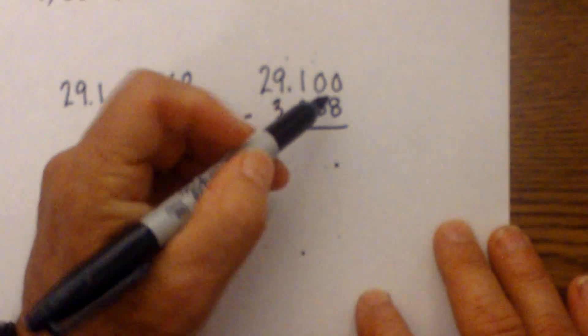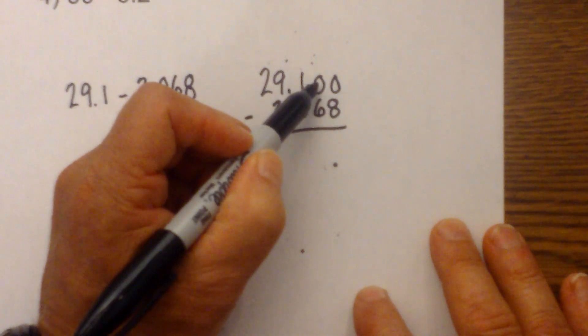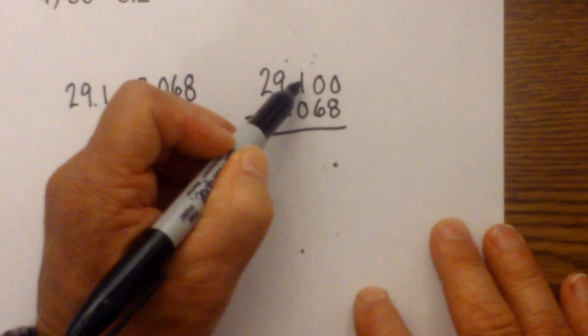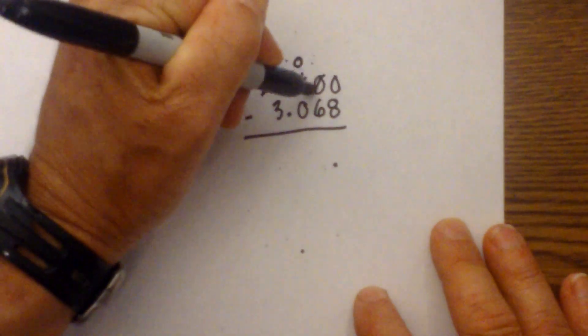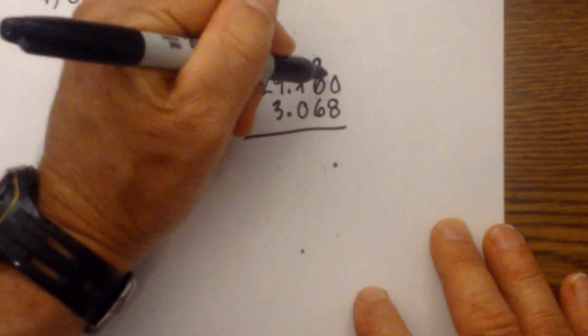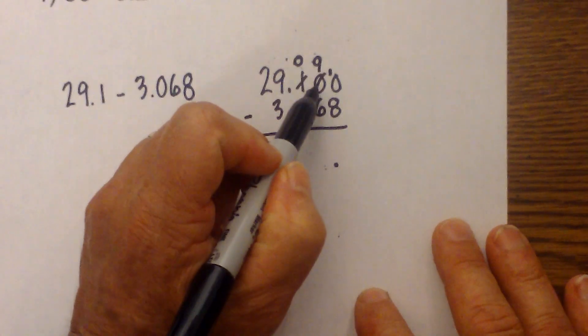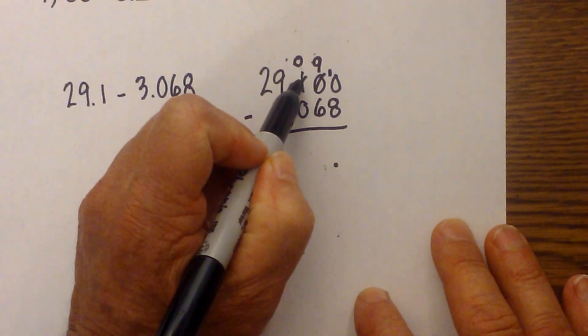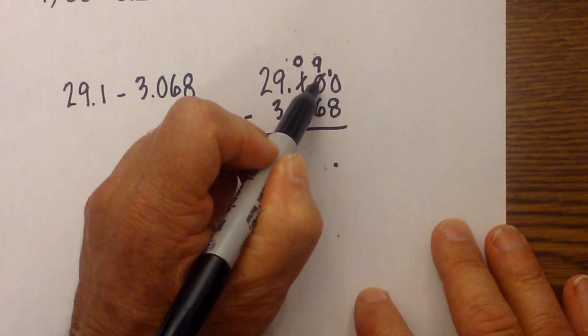Now we have eight minus zero, so it needs to borrow, but it can't borrow one from next door because it's a zero. So we've got to borrow from the one way over here. This becomes a zero, this will become a nine because this zero needs to borrow one. You can't borrow from a zero, so it borrowed from the one, and then this guy borrowed from this one, so it becomes a nine and that becomes a ten.